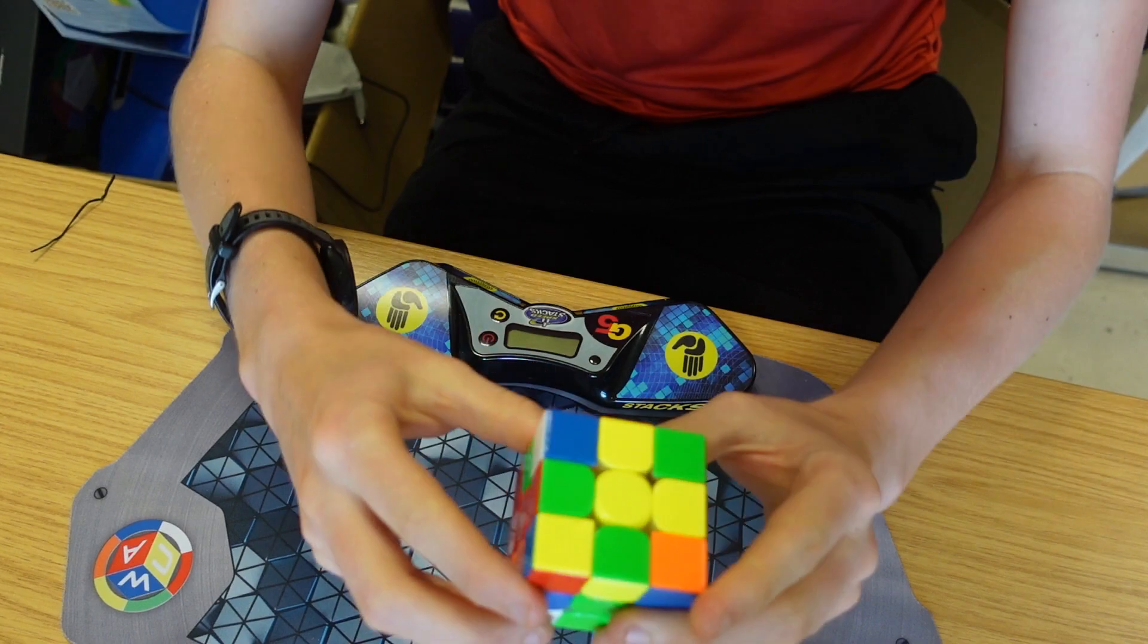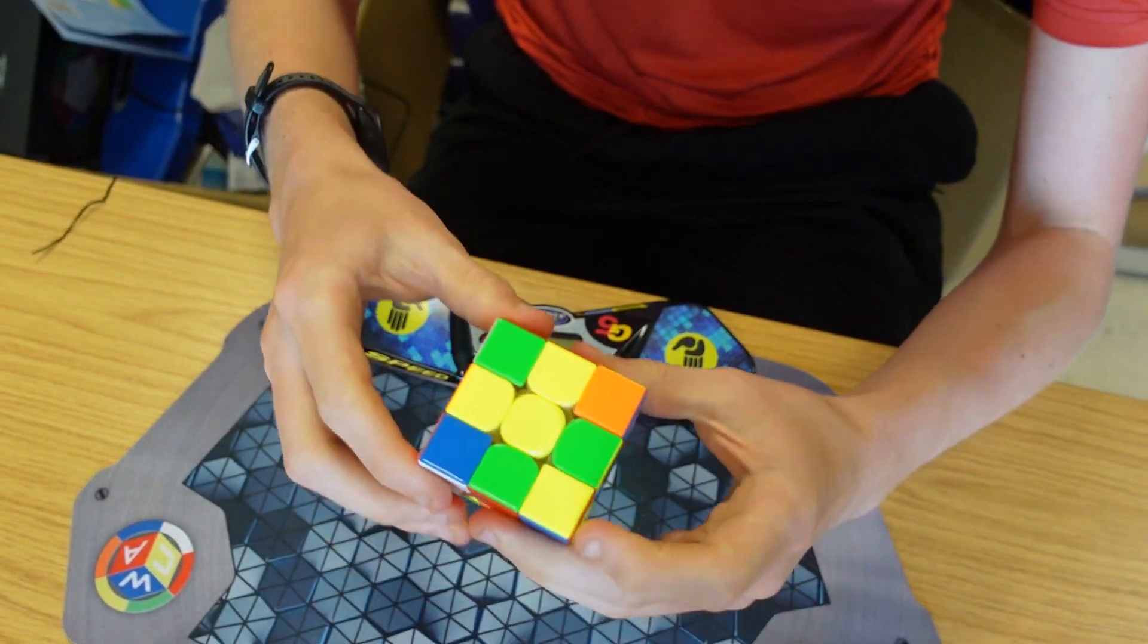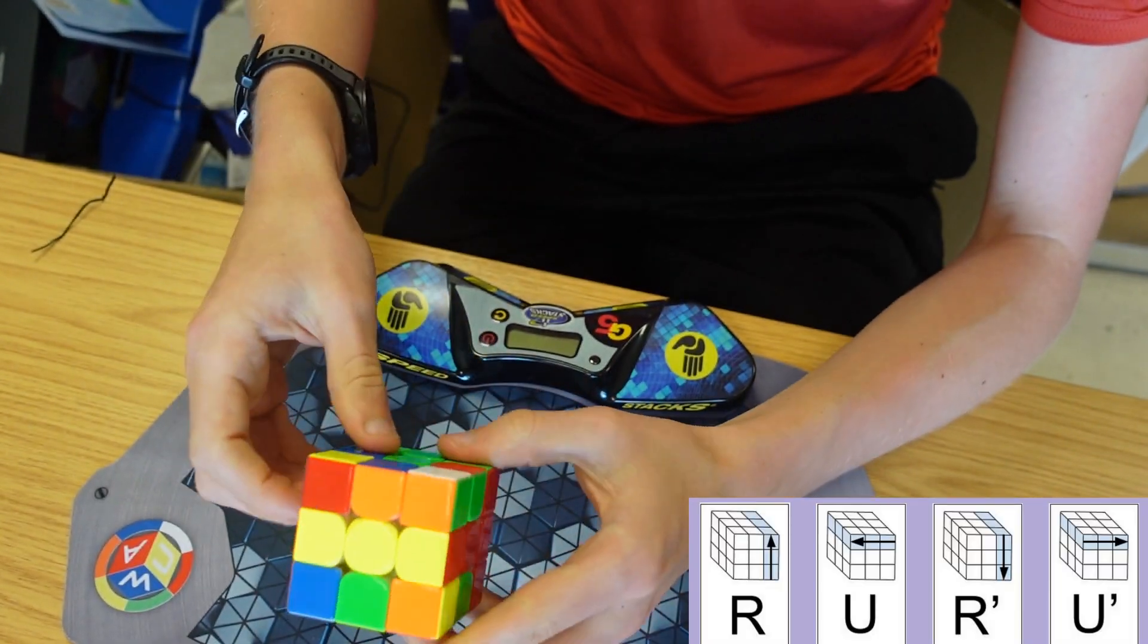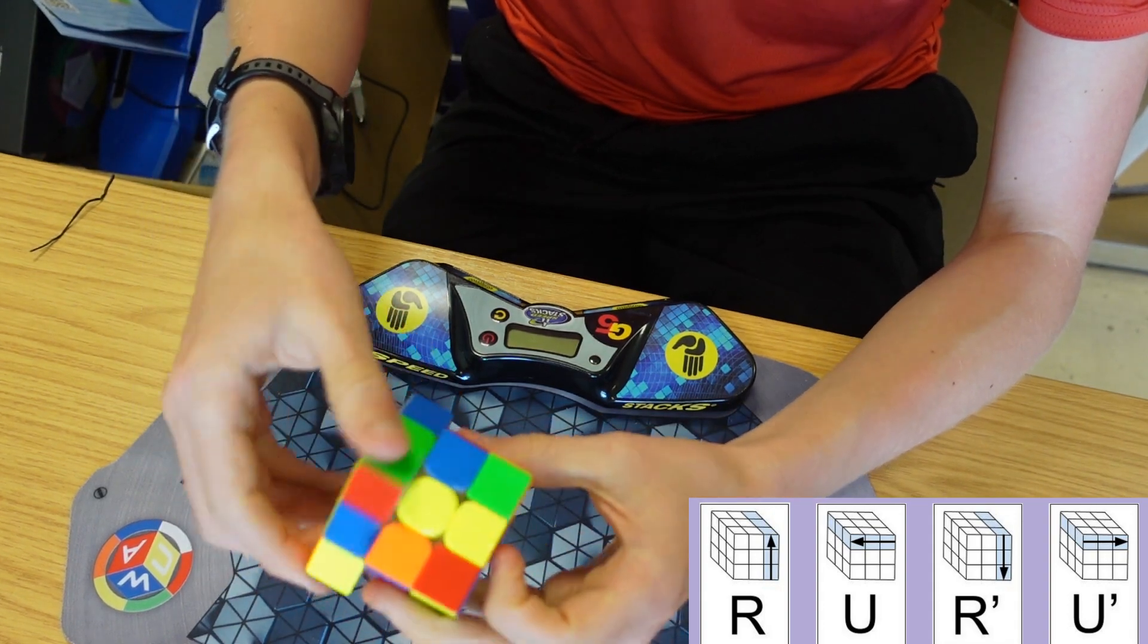The next step is to insert the corners. We use what's called the sexy move, which goes R U R prime U prime. Then we insert each of the corners using that algorithm, and sometimes you're going to have to do it multiple times.